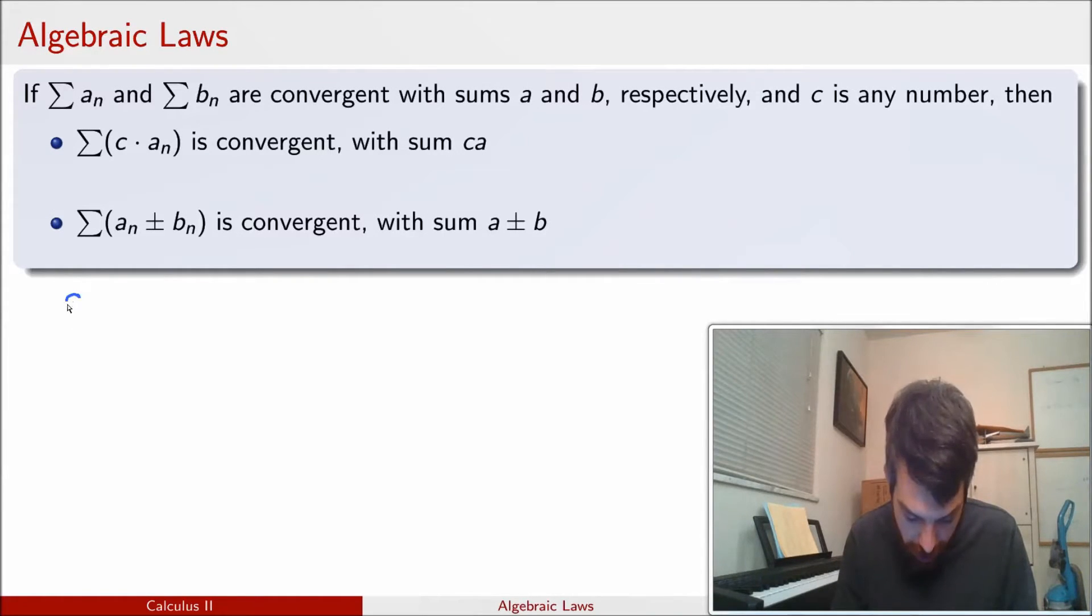To see why this might be true, if I let Sₙ denote the partial sum, so a₁ plus all the way down to aₙ, I'm only going to do here the first of these two expressions. So then if I go and multiply Sₙ by a constant c, this is just c times a₁ plus all the way down to aₙ.